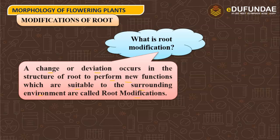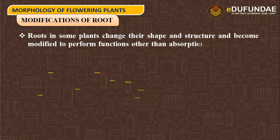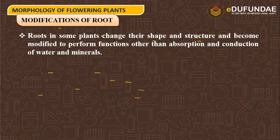In some plants, roots change in shape and structure and become modified to perform functions suitable to the surrounding environment, other than absorption and conduction of water and minerals. Roots are modified for support, storage of food, respiration, and climbing.